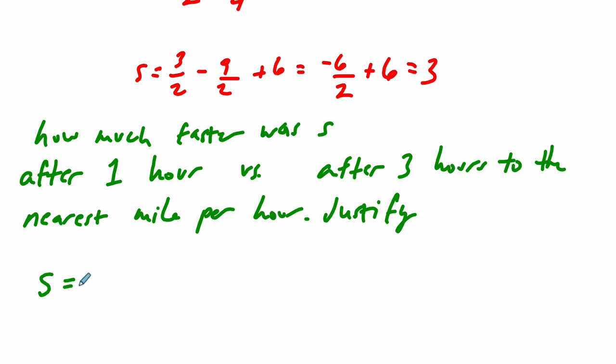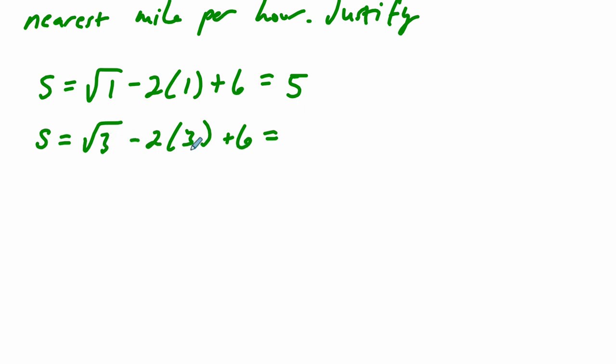So I'm going to say S when t is 1 is the square root of 1 minus 2 times 1 plus 6. And that equals 1 minus 2 plus 6, which is 5. So at one hour, it's moving at a speed of 5, don't forget, 500 miles per hour. And the other one, at three hours, it's the square root of 3 minus 2 times 3 plus 6. Well, the only thing left is the square root of 3 because you have minus 6 plus 6.